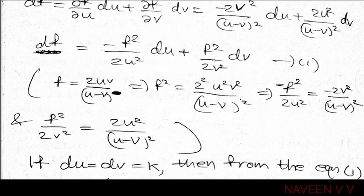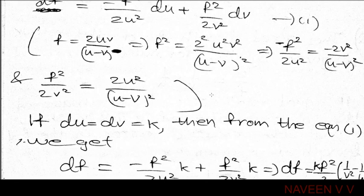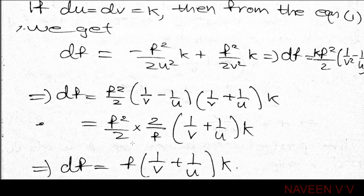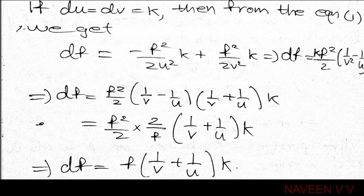Since du = dv = k, the variation in focal length is df = [minus f²/(2u²)]k + [f²/(2v²)]k, which implies df = (f²/2)(1/v² minus 1/u²)k. Applying the difference of squares formula, a² minus b² = (a minus b)(a plus b), we get df = (f²/2)(1/v minus 1/u)(1/v + 1/u)k.